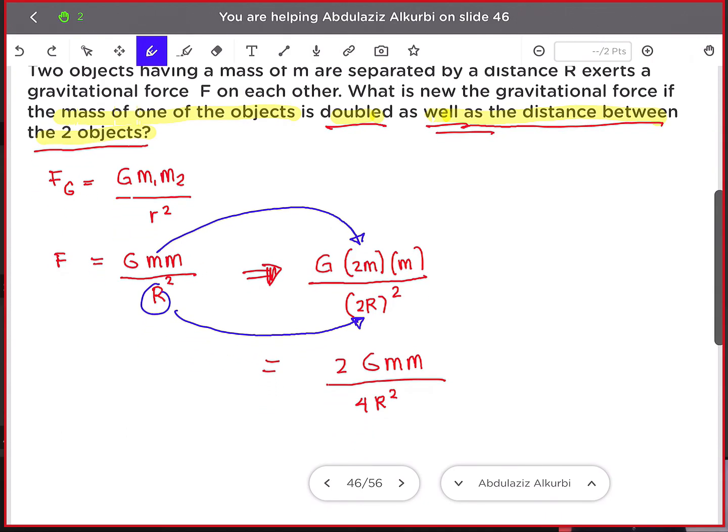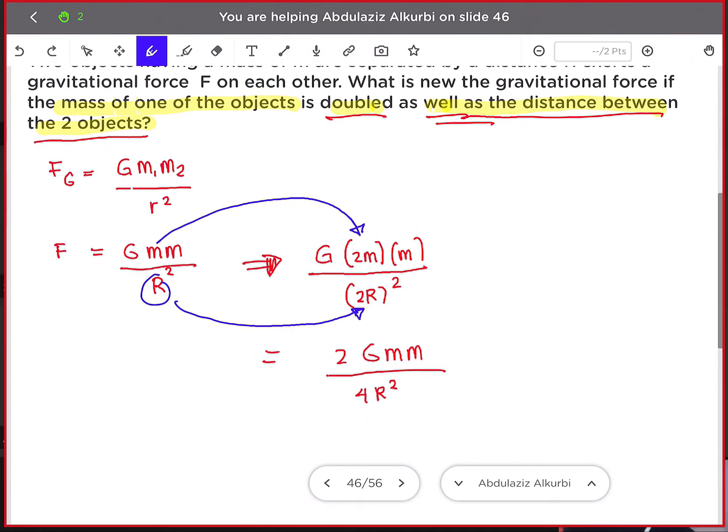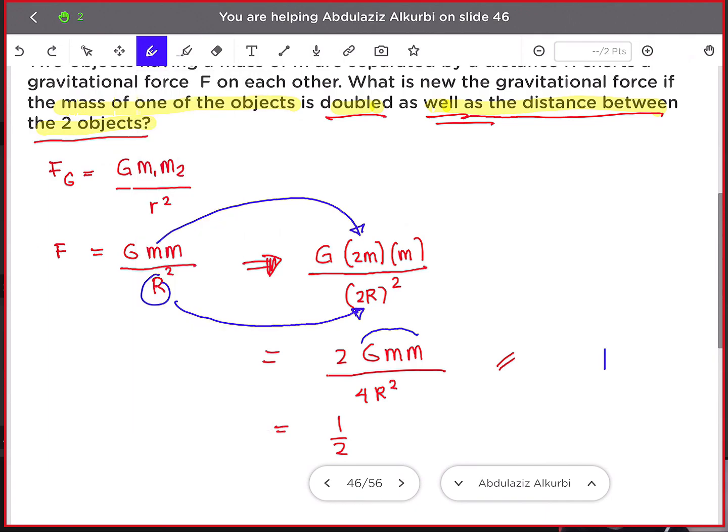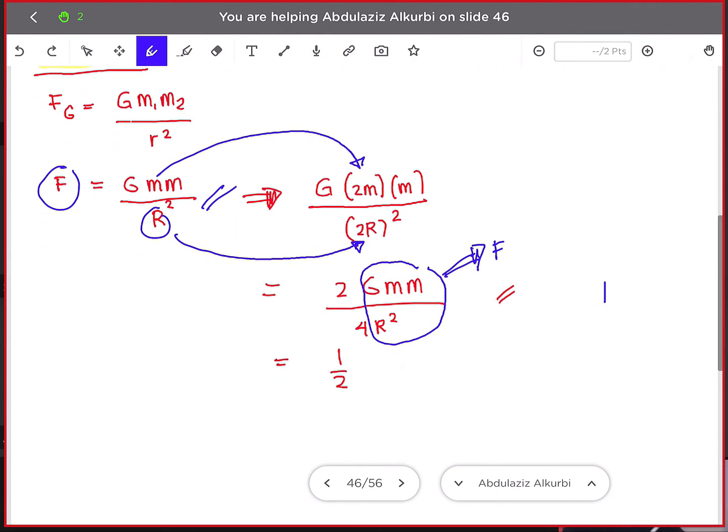All right, let me proceed now. So now I could rewrite this equation. I will simplify 2 and 4, I will have one half. And take note that your GM times M over R squared is in fact equal to our F. It's actually this. So that is just equal to our F as shown in this equation.